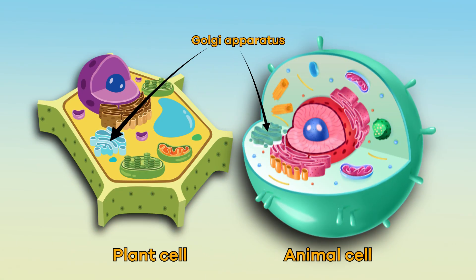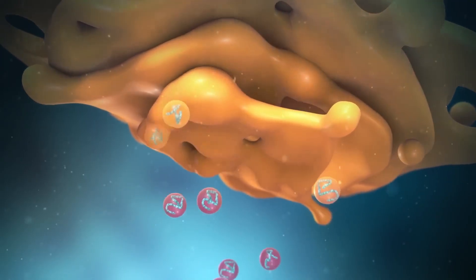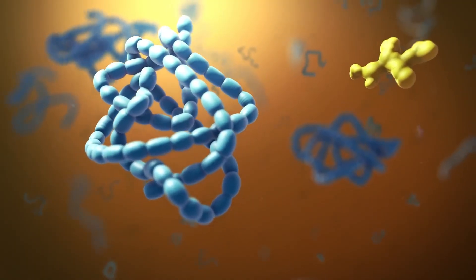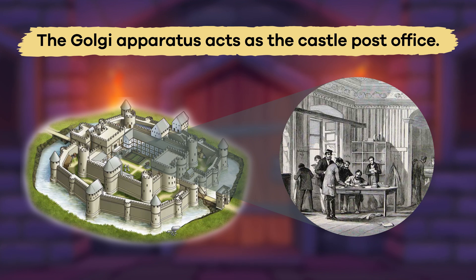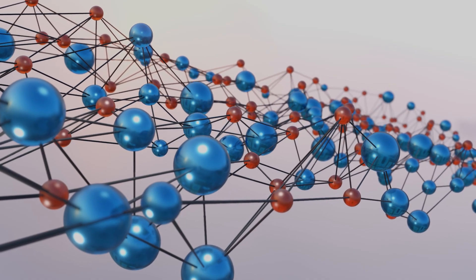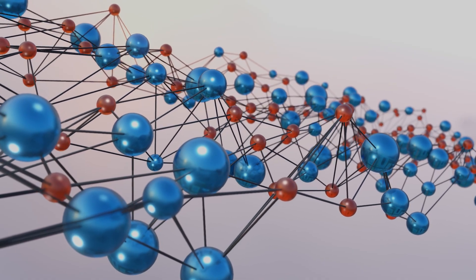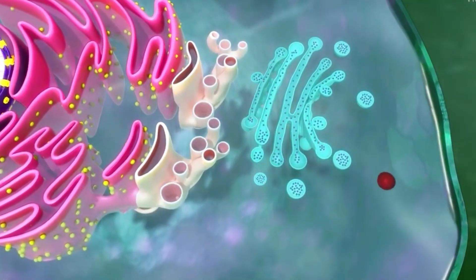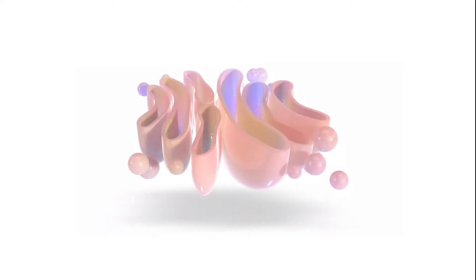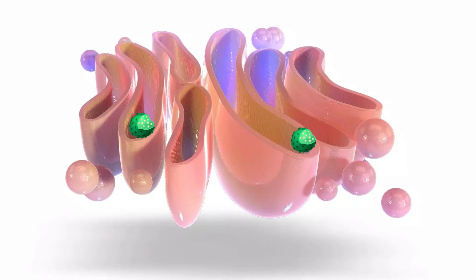The Golgi apparatus collects simple molecules together to make them more complex. It acts as the castle post office. It packages the complex molecules and stores them or sends them out of the cell.